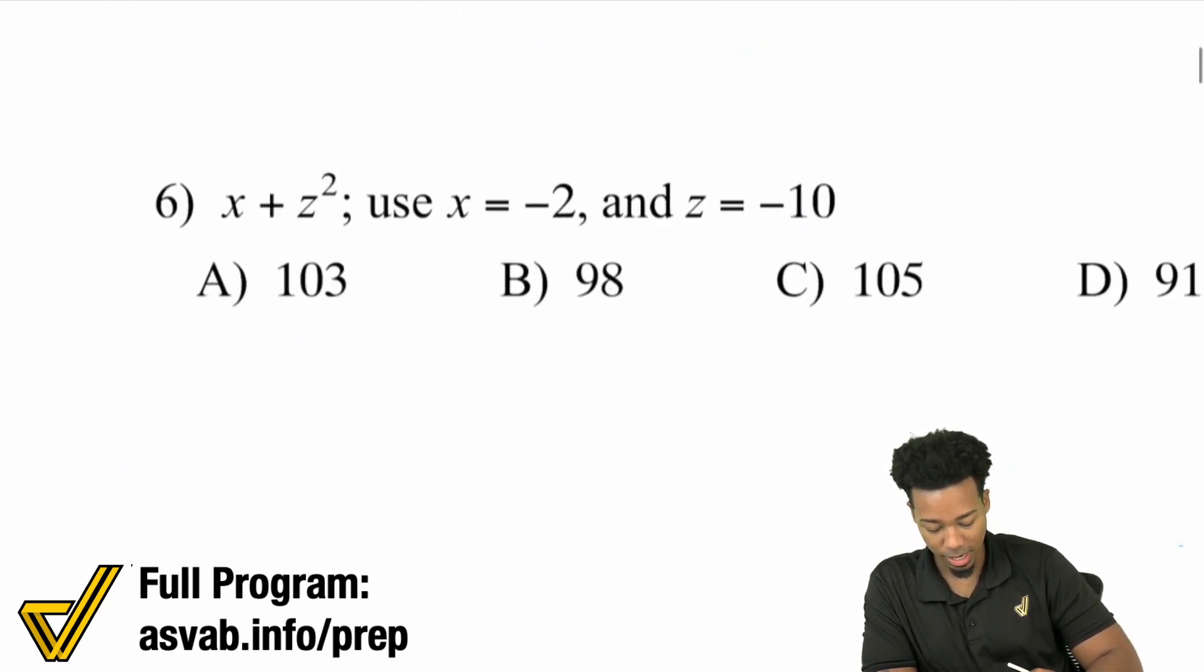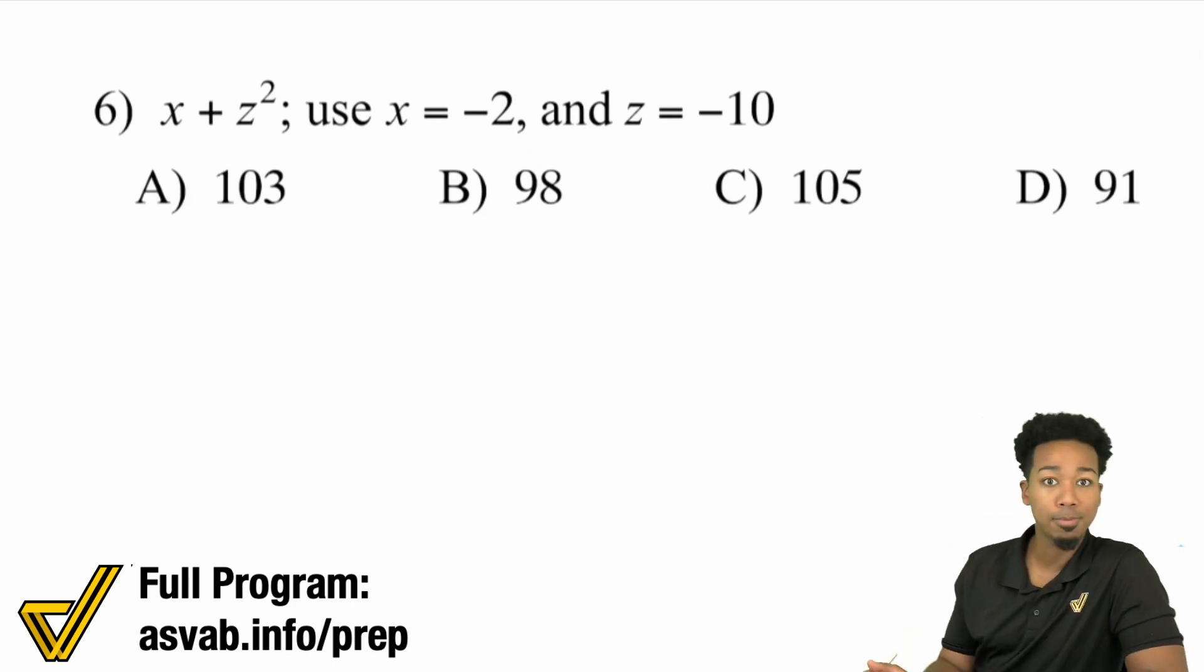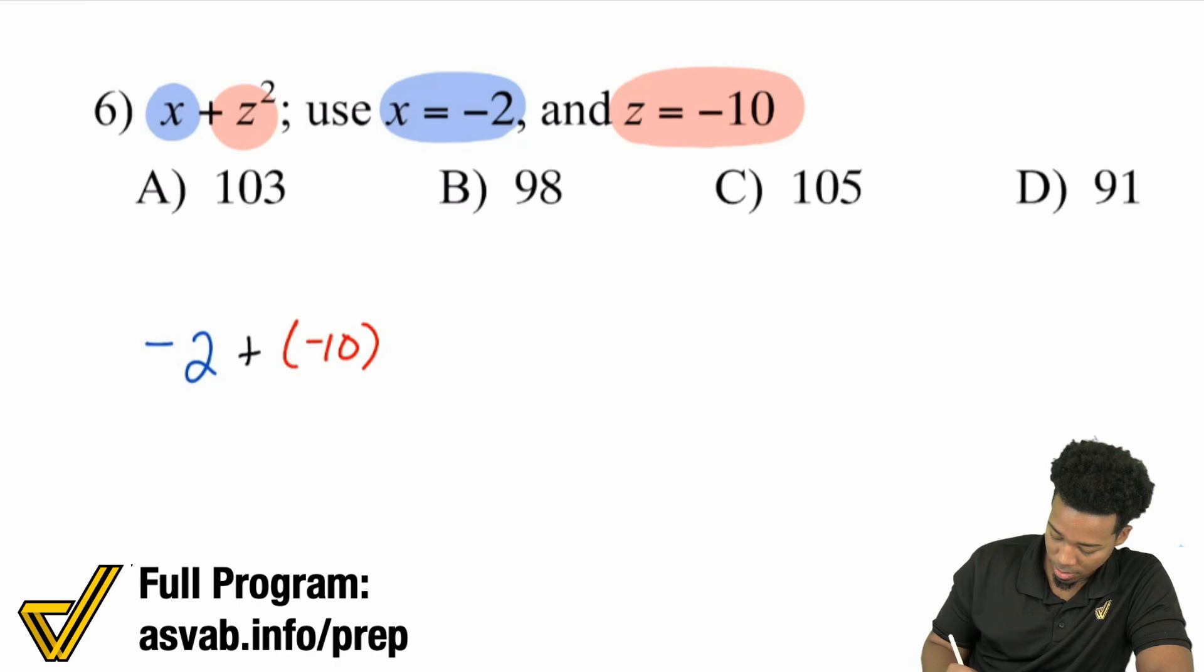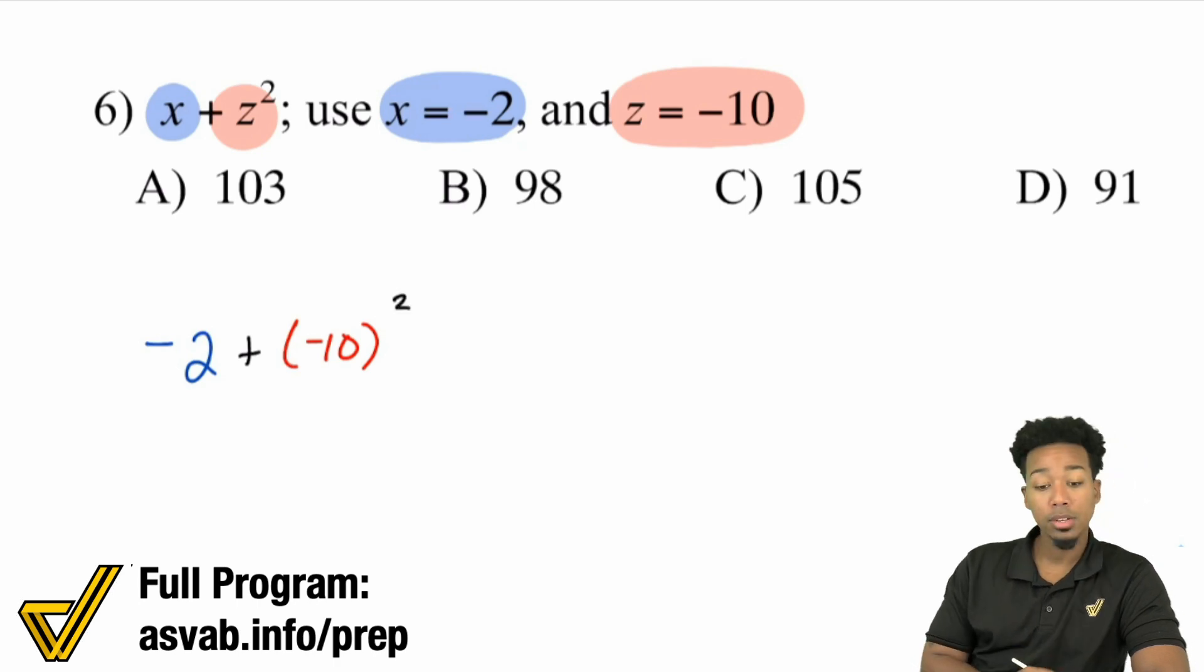Let's take a look at some more examples. Let's say we have something like x + z². x right over here, so we end up having -2 + z². What's z going to be here in this case? -10. So we have (-10)². We know that with the order of operations, we take care of exponents first. So what we'll end up doing is, -10 times -10.